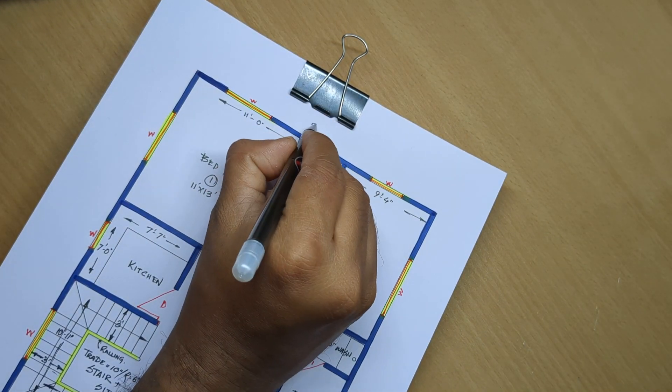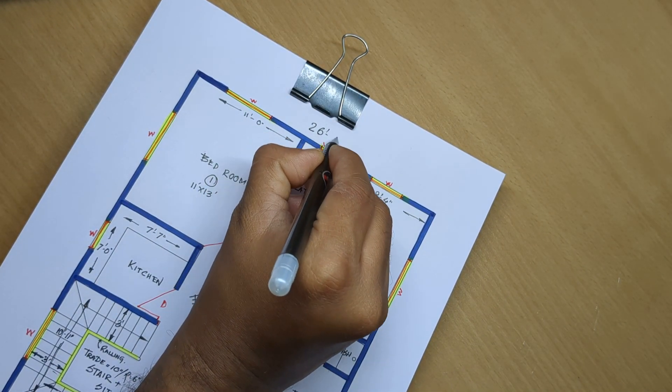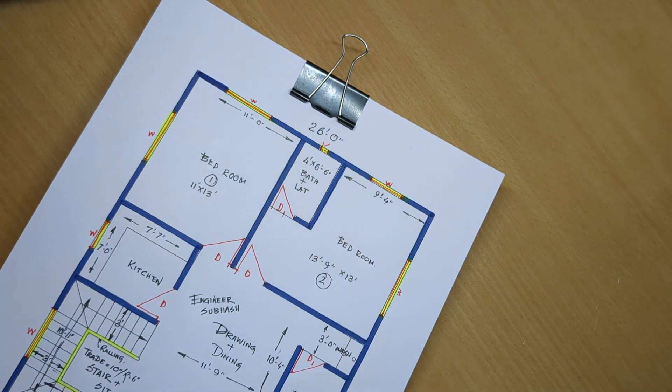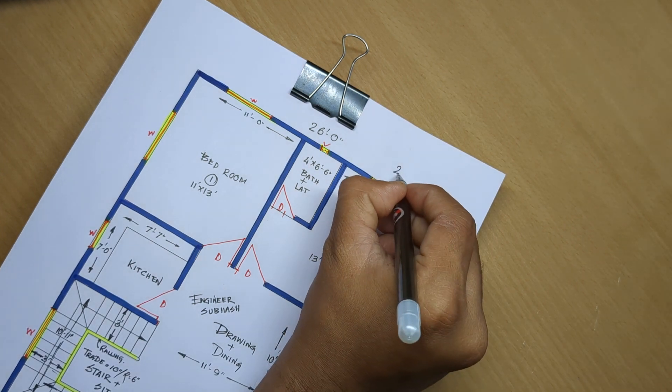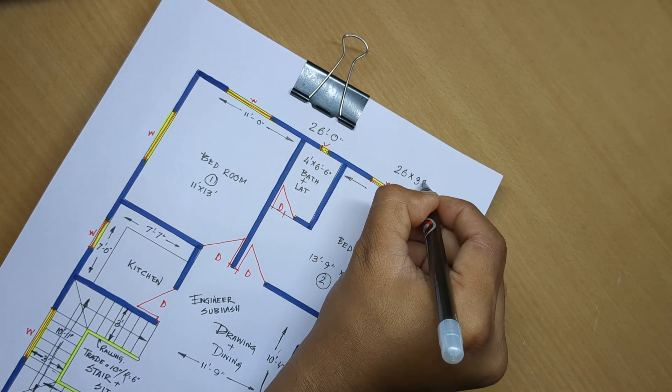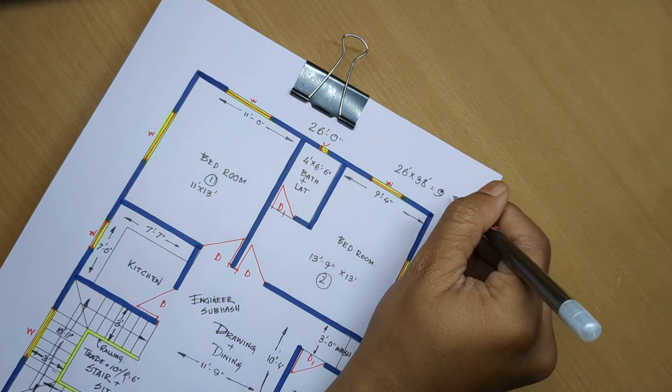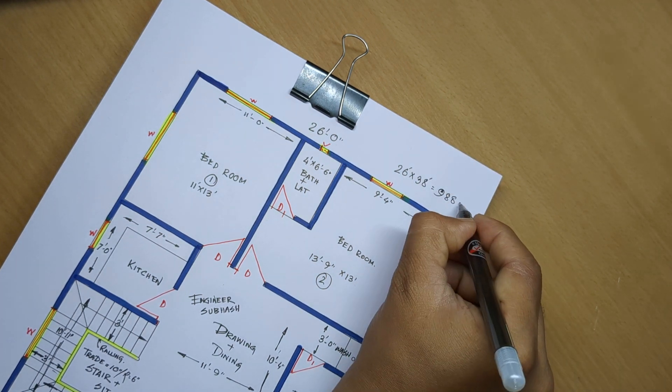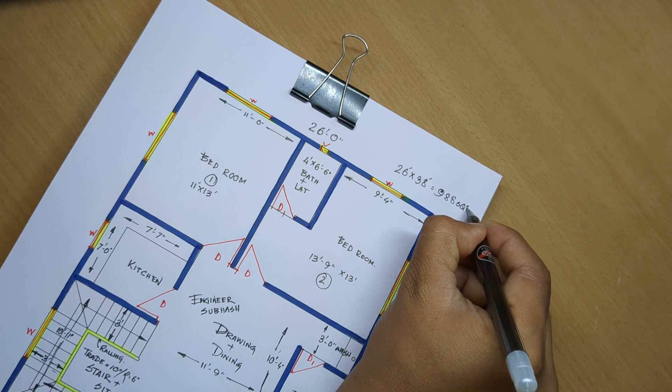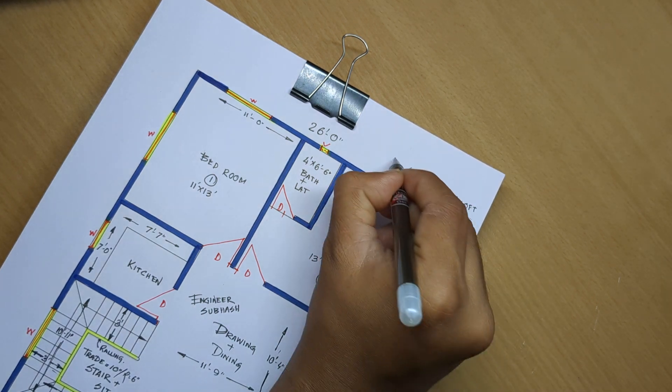Total 26 feet 0 inch and 38 feet 0 inch. 26 feet, 38 feet, 988 square feet building area.